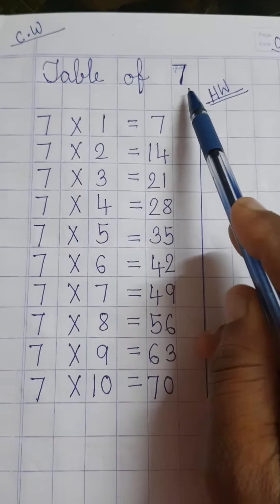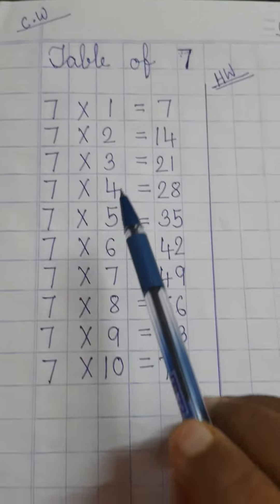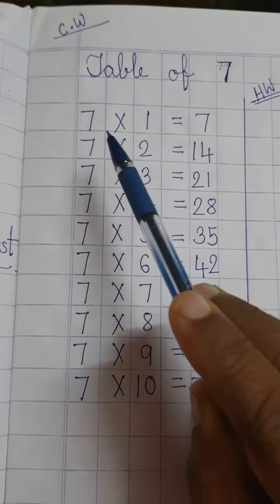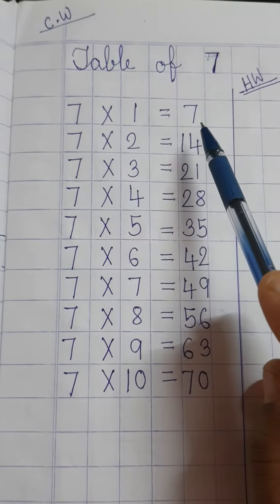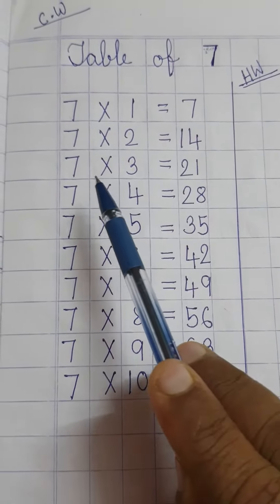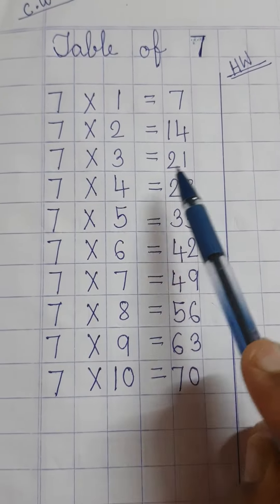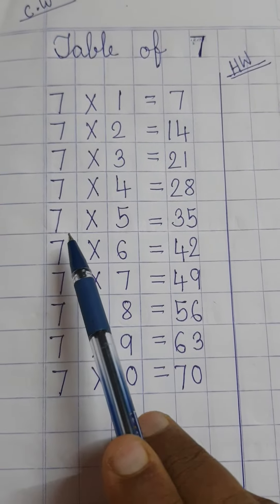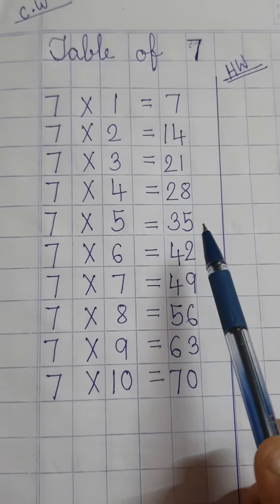Now start and read after me, repeat after me. 7 × 1 = 7, 7 × 2 = 14, 7 × 3 = 21, 7 × 4 = 28, 7 × 5 = 35.